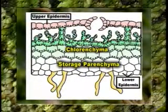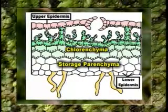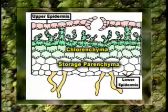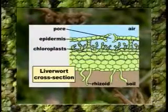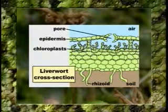The thallus has a well-defined upper and lower epidermis. The upper epidermis is single-layered, sometimes two-layered as in Marchantia indica, consisting of thin-walled cells with a few discoid chloroplasts. The outer walls are cutinized and slightly thickened. The epidermis is interrupted by many barrel-shaped air pores, one on the roof of each air chamber. Each air pore is surrounded by 16 to 40 cells having cutinized walls and a few chloroplasts.